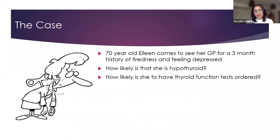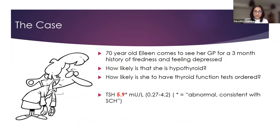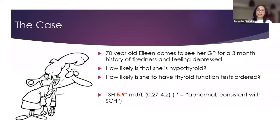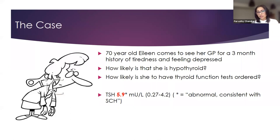So we've seen that because Eileen presented with depression, she's twice as likely to have her thyroid function test ordered. We get a thyroid function test for Eileen — the TSH comes back as 5.9 mU/L. Our lab reference range is 0.27 to 4.2 mU/L, so this is outside the reference range. It comes back in red letters flagged as abnormal and consistent with subclinical hypothyroidism. Eileen has access to her results, has seen the red letters, and is now demanding levothyroxine for her symptoms.